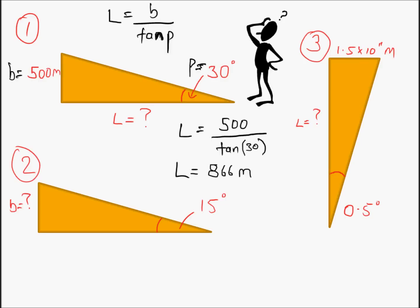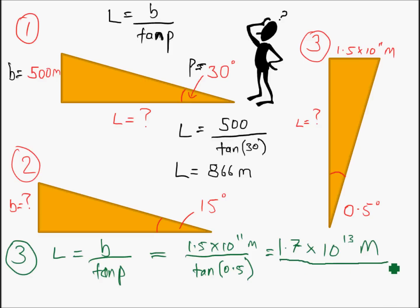OK, and I'm going to have a quick go at question 3. All right, so use the same equation: L equals B over tan P. And this time we're finding L again, so I already have what I need. So L is equal to—I'm going to say I already have what I need. I mean I don't need to rearrange it. So to find out L, it's 1.5 by 10 to the 11 divided by tan 0.5. I'll stick that into the calculator, and the calculator comes up with for me 1.7 by 10 to the 13 metres. So you hopefully should have got the same thing for your three questions.